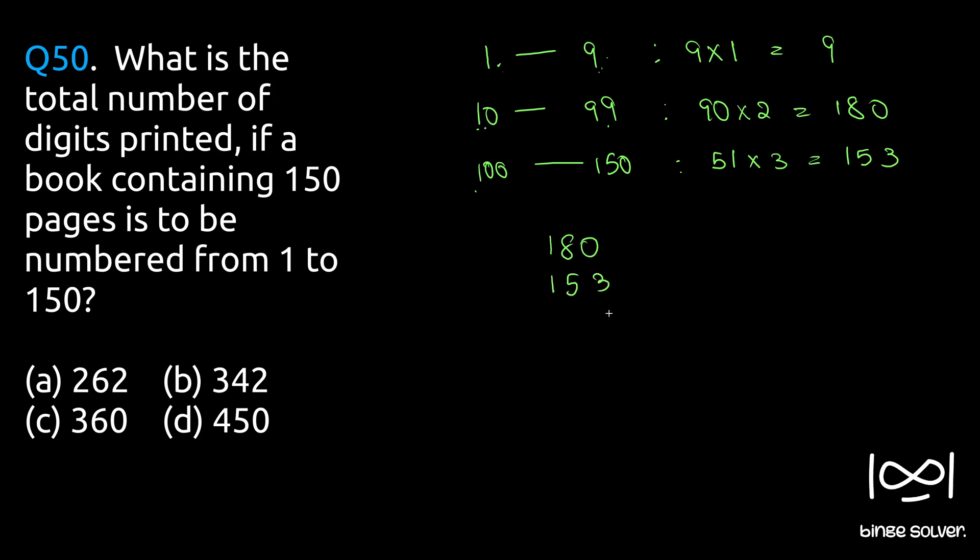If we sum it up: 180 plus 153 plus 9. 9 plus 3 is 12, 9 plus 5 is 14... The total is 342 digits. The solution to Question 50 is B: 342.